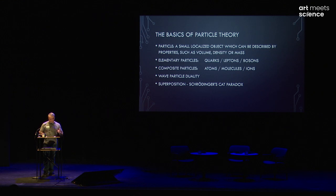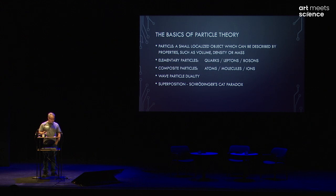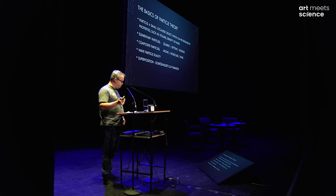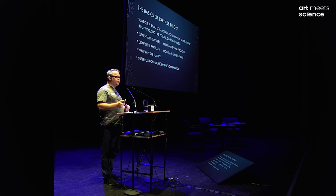Very briefly, without overdoing what's been said on physics — and I'm not an expert — I'm going to cover particle theory. A particle is a small localised object which can be described by various physical properties such as volume, density, or mass. We've got elementary particles: quarks, leptons, and bosons, and the composite particles of atoms, molecules, and ions. Two theories I want to mention: first, wave-particle duality, where objects such as light have both wave-like and particle-like characteristics simultaneously. And also superposition, where particles are able to exist in multiple states simultaneously — the Schrödinger's cat paradox being the most obvious example, where a cat in a box is simultaneously alive and dead, critically, until it's observed.